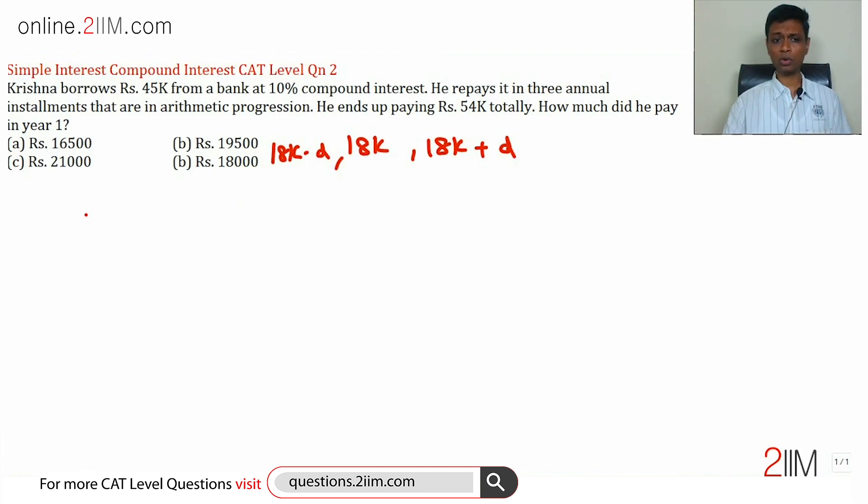Now let's think about his amount outstanding at the end of year one. How much money will he owe the bank? That will be 45,000 × 1.1. Why 1.1? Because he's paying 10% interest. So 45,000 × 1.1 is what his amount outstanding would be at the end of year one.